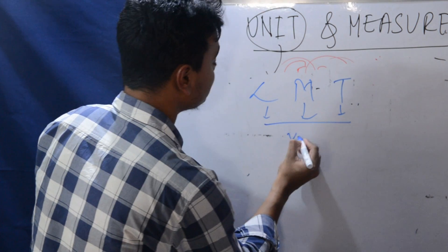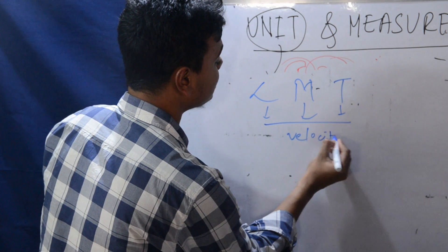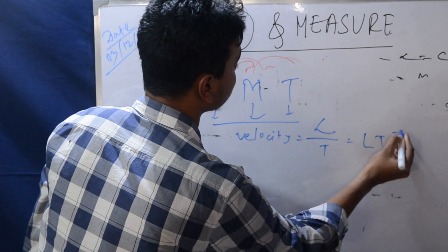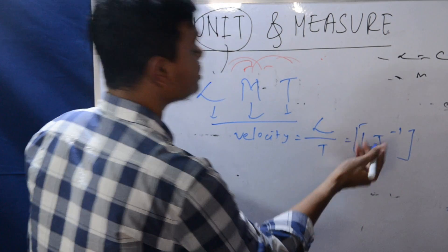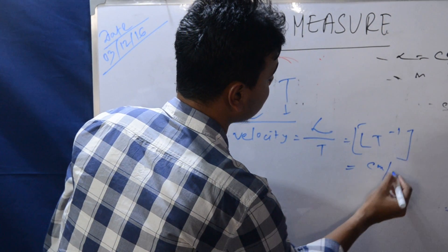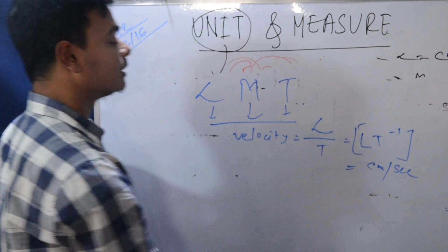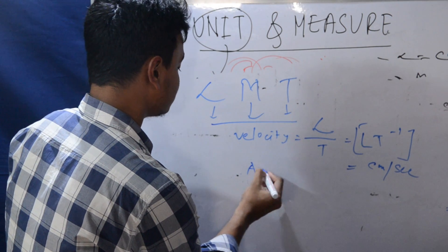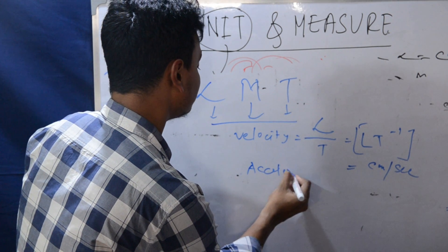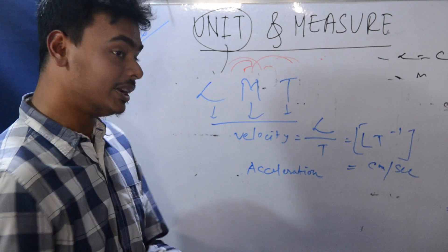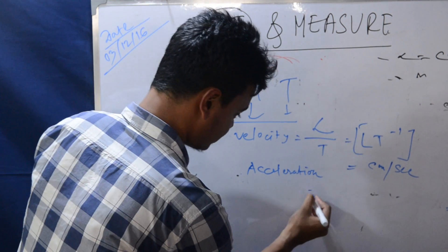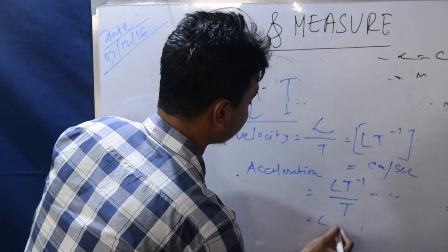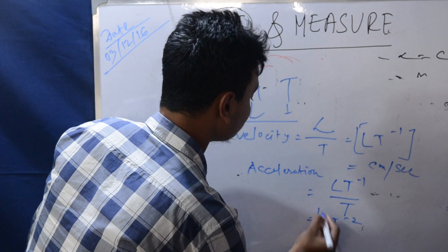Let's see an example. What is velocity? Velocity has dimensions L to the power 1, T to the power minus 1 — that is, 1 centimeter per second in CGS. Acceleration means the change of velocity with time, so its dimension is L T to the power minus 2.